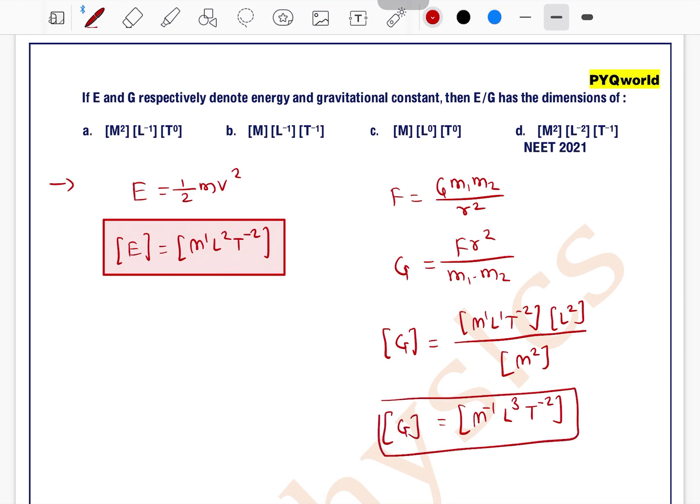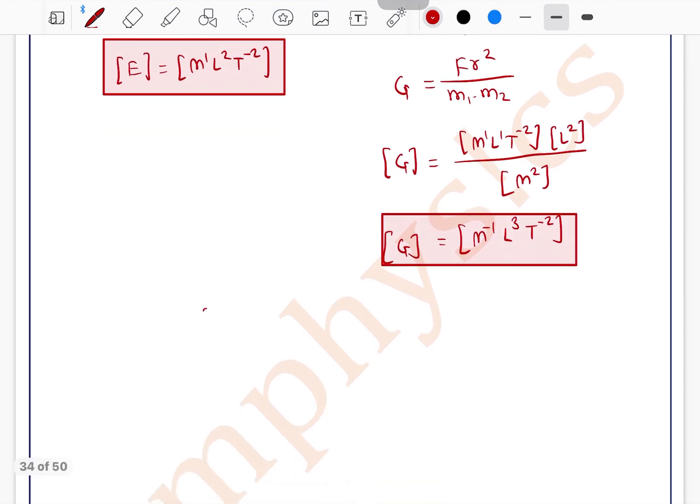Now if we divide the dimension of E by the dimension of G, it can be written as m¹l²t⁻² divided by m⁻¹l³t⁻².